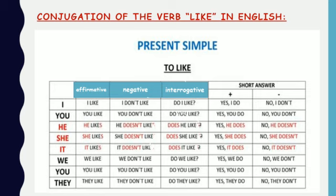For negative short answers, use the auxiliary in its negative form. For example, if asked 'do you like milk?' and the answer is no, you say: no I don't. Keep it short — don't say 'no I don't like milk'. No I don't, no you don't, no he doesn't, no she doesn't, no it doesn't, no we don't, no you don't, no they don't. Pay attention to he, she, and it — they use 'doesn't'.